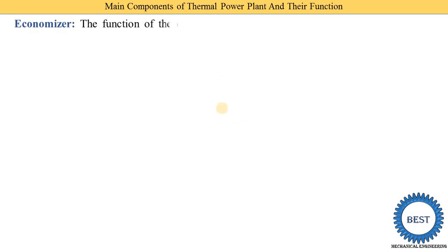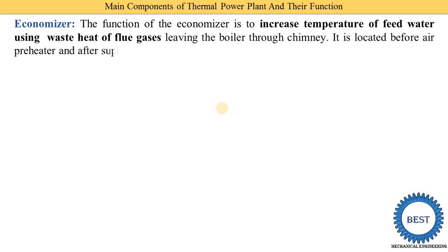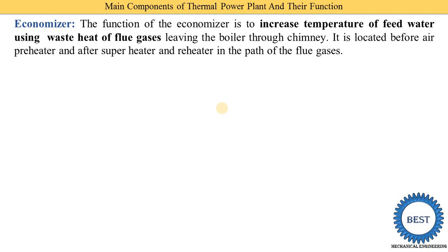The function of the economizer is to increase the temperature of feed water using the waste heat of the flue gas leaving the boiler through the chimney. The water is first supplied to the economizer, where its temperature is increased, and then this high-temperature water is supplied to the boiler. The economizer is installed before the boiler — first water enters the economizer, temperature is increased, and then it is supplied to the boiler.